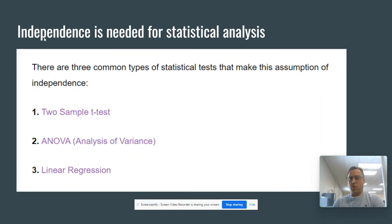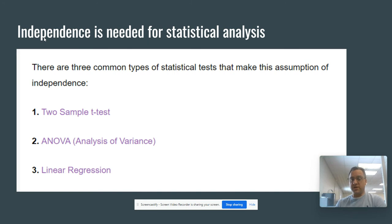So why is that important? A lot of statistical testing relies on the idea of independence. So if you're doing a two-sample t-test, you need to make sure that your data is independent, otherwise your results aren't valid.